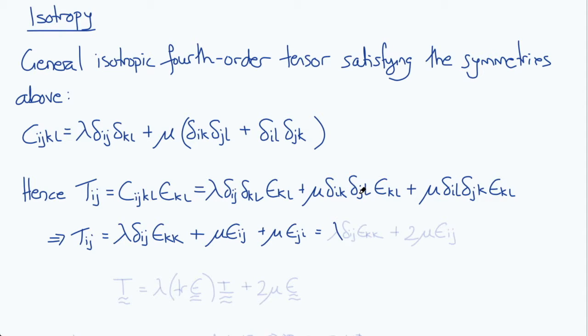And similarly δil δjk times εkl becomes an εji. Since εij equals εji because it's symmetric, we get lambda δij εkk plus 2mu εij.